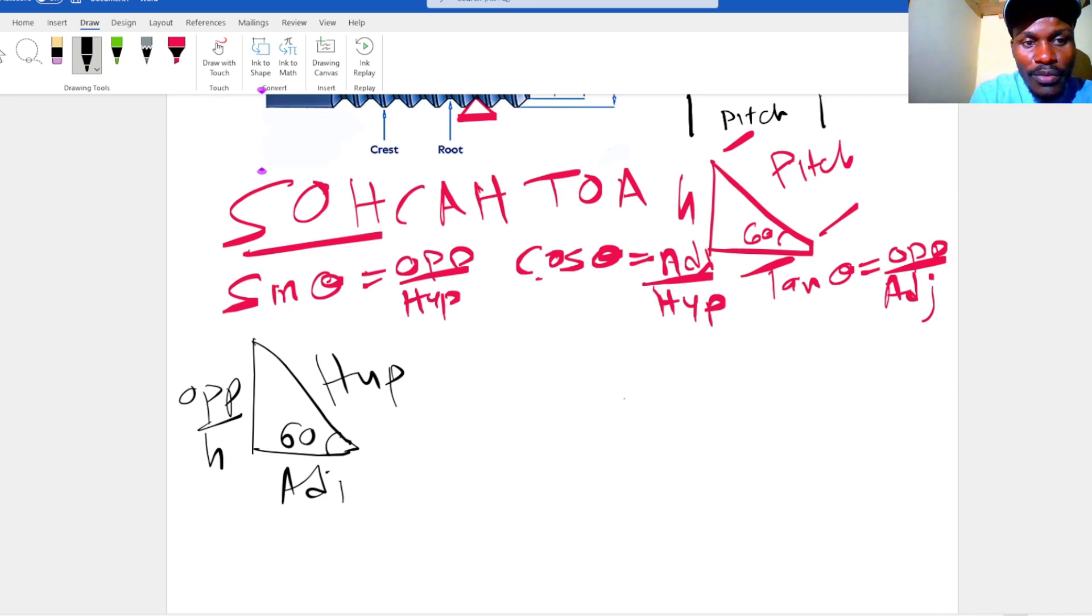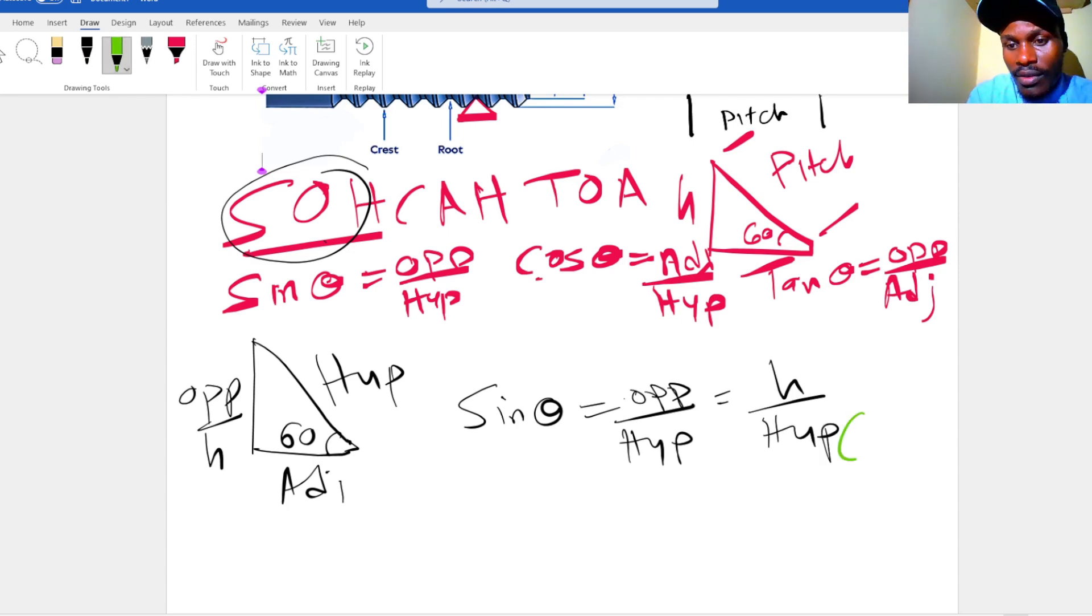using the first formula, sine theta, which is opposite over hypotenuse—that is h over hypotenuse. Now we already know what hypotenuse is: 1.5. And we know what theta is: 60 degrees. So sine 60 is the same as h over 1.5.